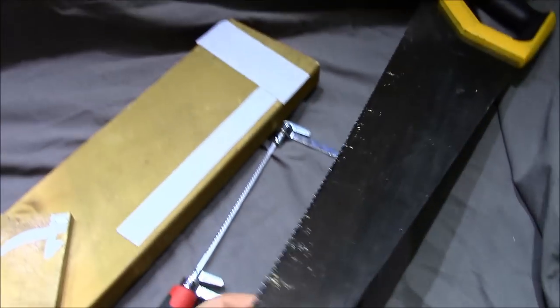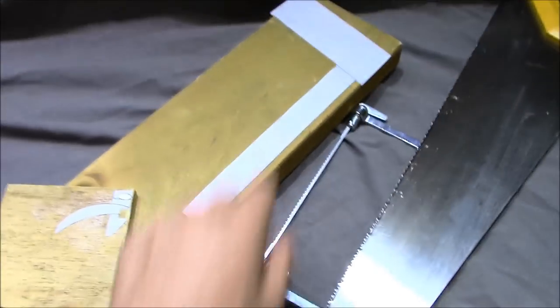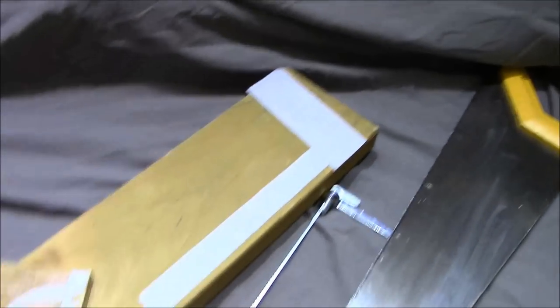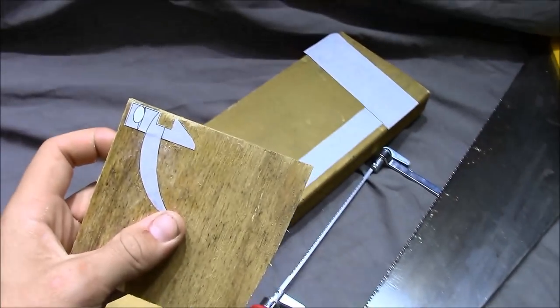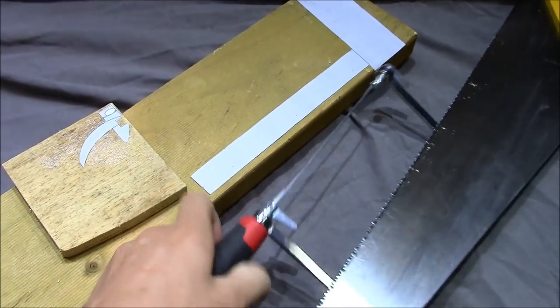Once you've glued your blueprints to the wood you're going to need to cut out the crossbow body with a wood saw and you can cut out the trigger with a coping saw.